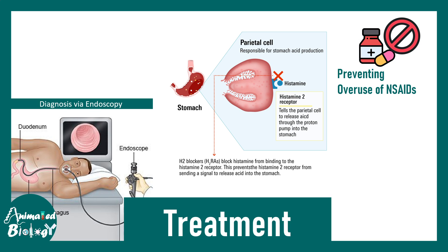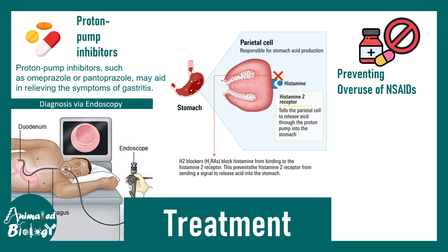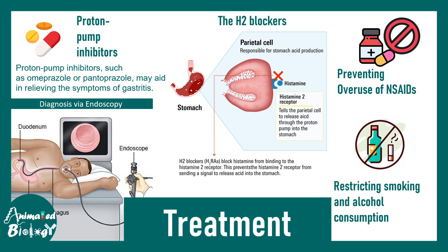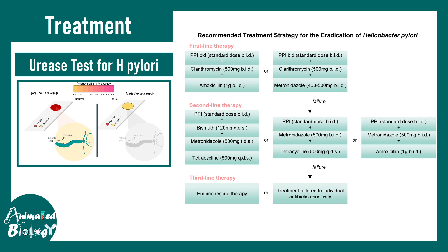Diagnosis is done generally by endoscopy. Treatments include proton pump inhibitors to reduce gastric acid production, and H2 blockers (histamine receptor blockers). Patients are advised to avoid overuse of NSAIDs and to restrict alcohol consumption and cigarette smoking. For chronic gastritis, H. pylori must be eradicated — the urease test is used for H. pylori detection — using first-line, second-line, and third-line therapy combining PPIs with a cocktail of antibiotics.